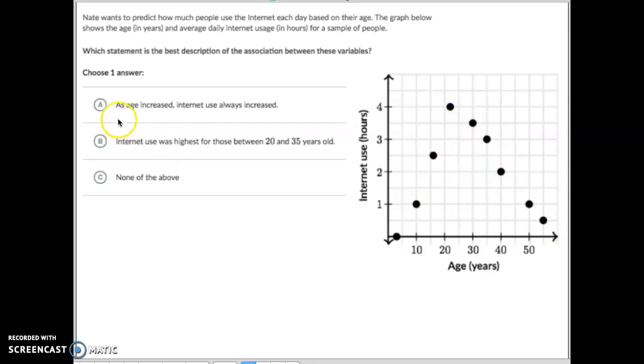So let's see what this says. It says, as age increases, internet use always increases. Well, it increases until you reach about the age of 20, but then it slowly comes down. So that letter A is not correct because it doesn't always increase.